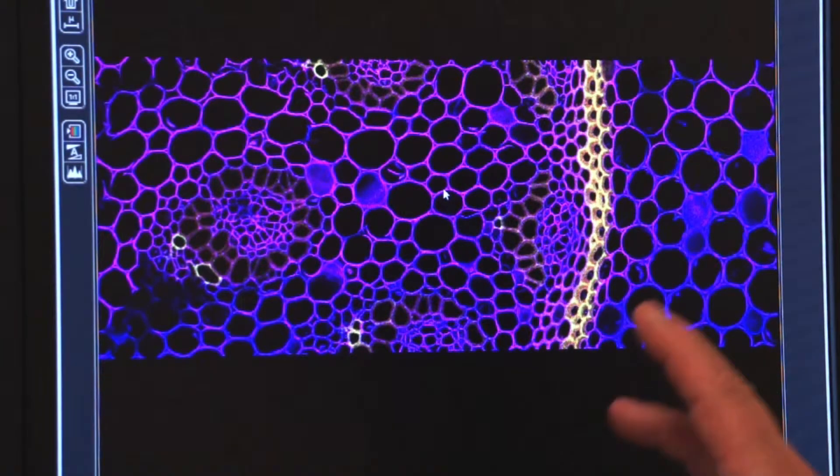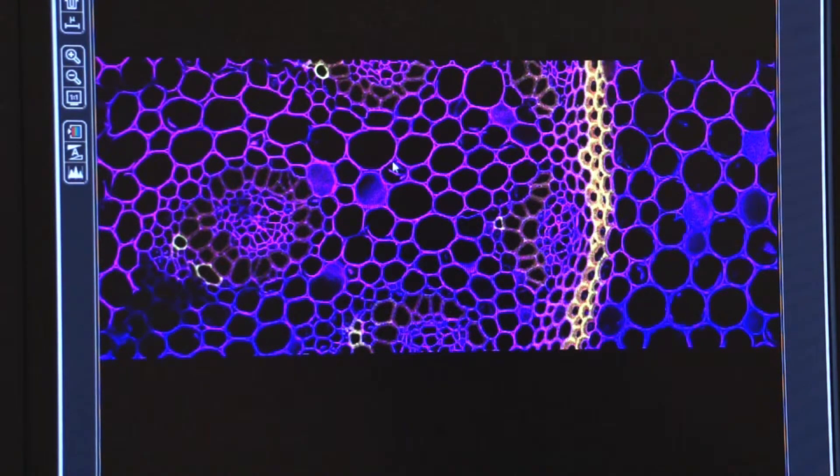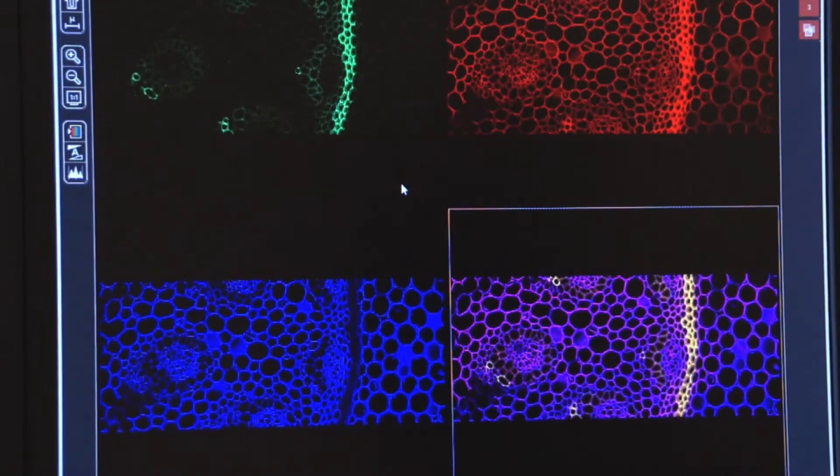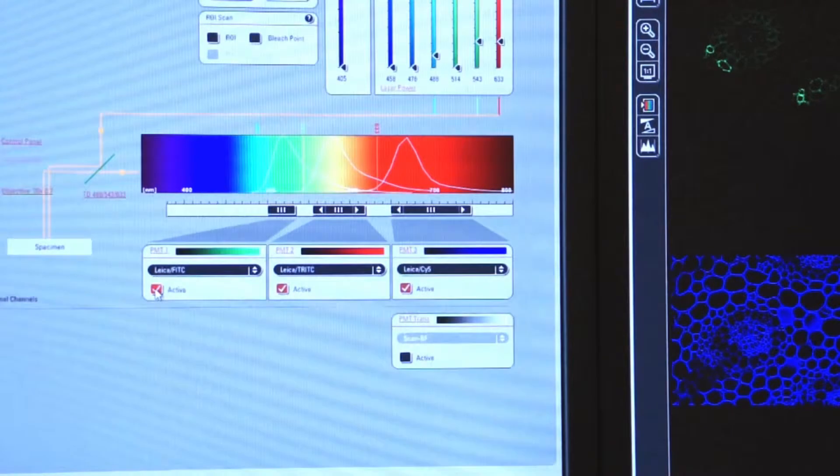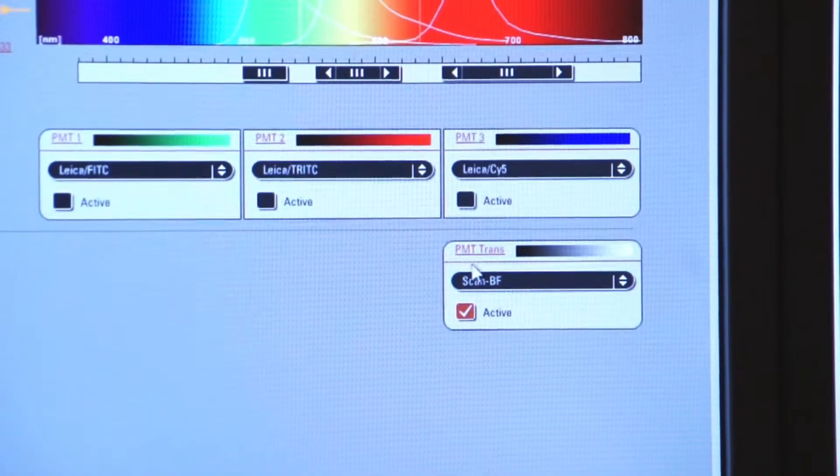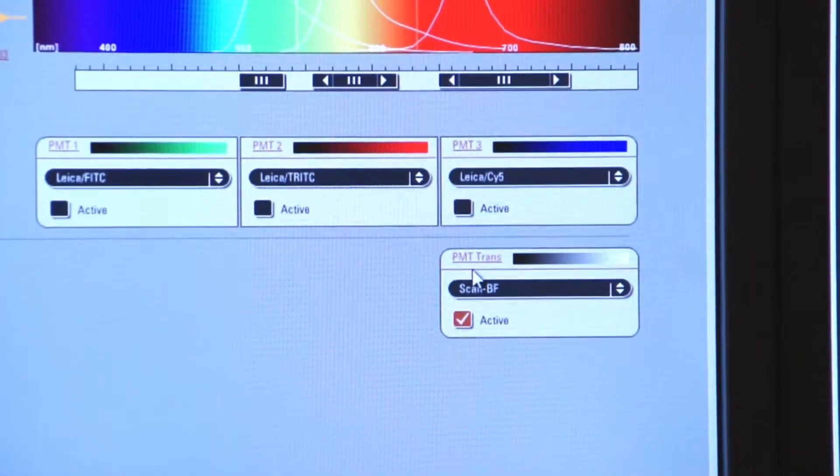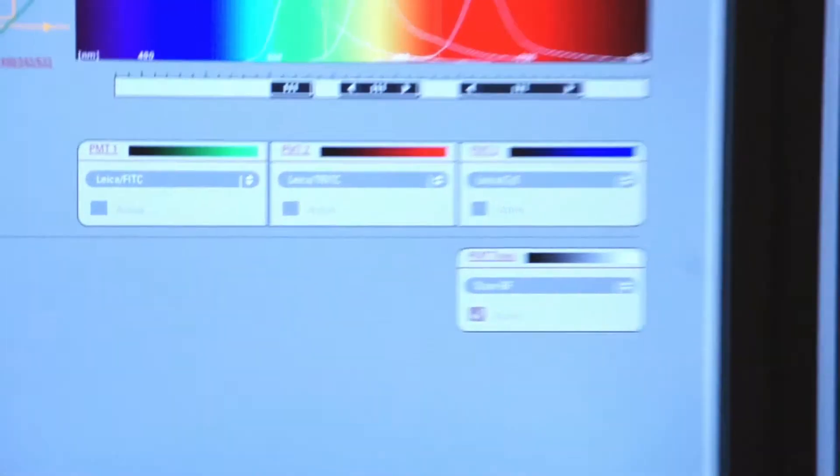One easy way to do this is to use the transmitted light PMT. We'll double click on the composite image. We're going to go over here and click on stop. Let's deactivate all three of the photomultiplier tubes, and we'll turn on only the bright field photomultiplier tube for transmitted light. Now if I click on live, here is my image in bright field.